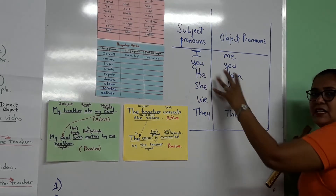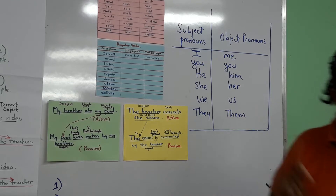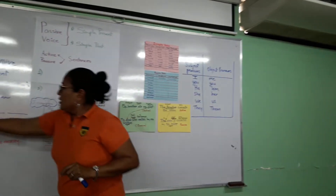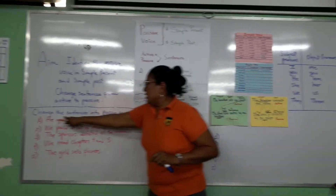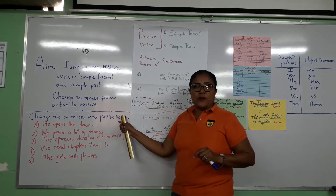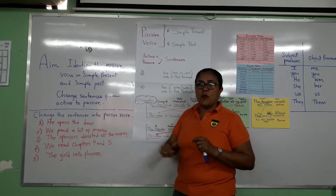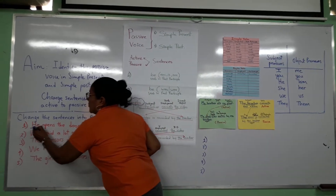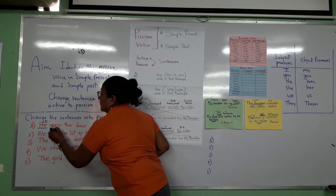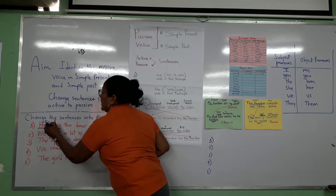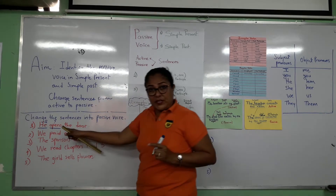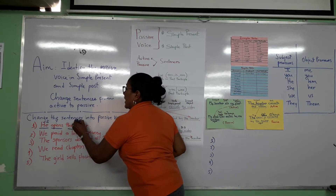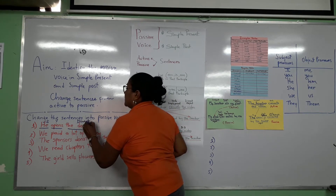Why do I say this? Because when you make a sentence like this — change the sentences into passive voice. The sentence is active. I identify the parts: the subject, the verb form in simple present, and 'the door' is my direct object.